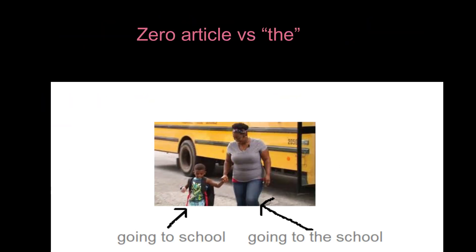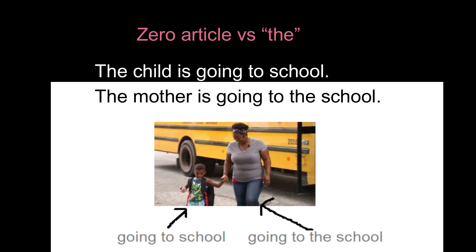Zero article versus 'the'. As we learned in the zero article section, 'the' is omitted when the intended meaning is the purpose for which a building exists, not the building itself. 'The child is going to school.' — not used, meaning the schooling. 'The mother is going to the school.' — 'the' is used to mean going to the school building as a visit.